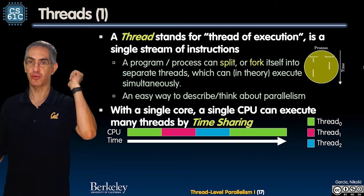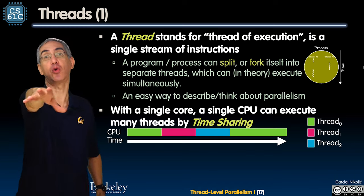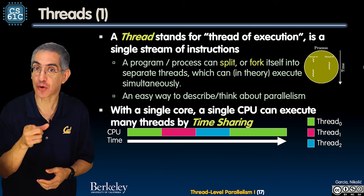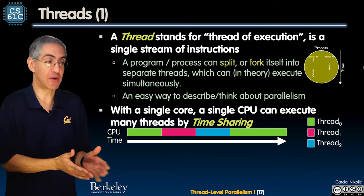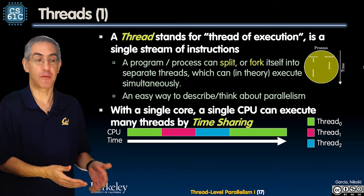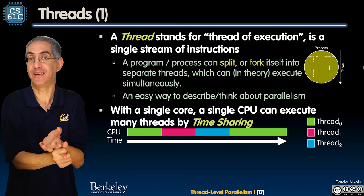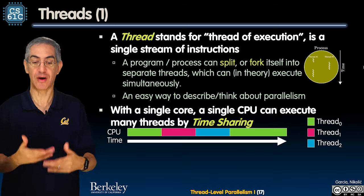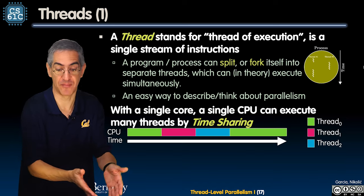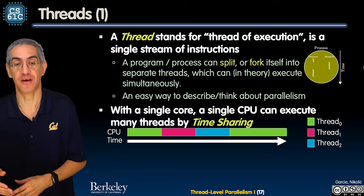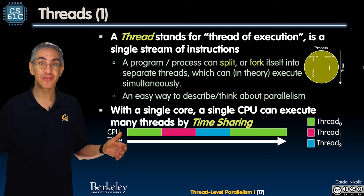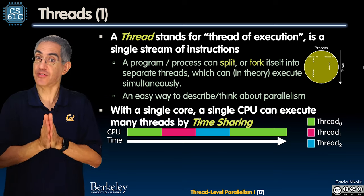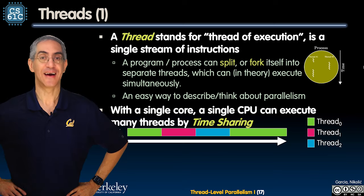Imagine the old-school days: I've got a single CPU and a single core. How do I handle multiple threads? How did your computer, in the days long gone, with a single core and a single CPU, run multiple programs? The OS is a program — how is it able to run the OS and anything else? Here's how it always did it: time-sharing.